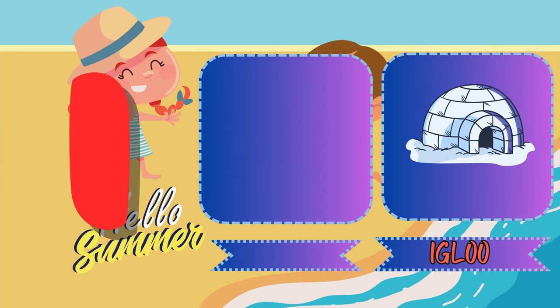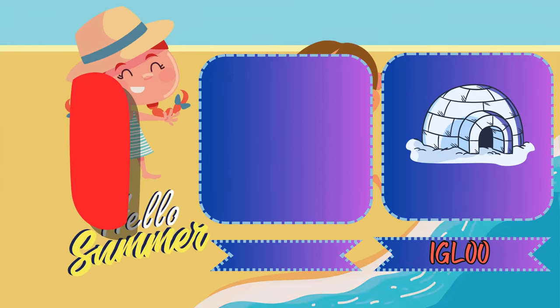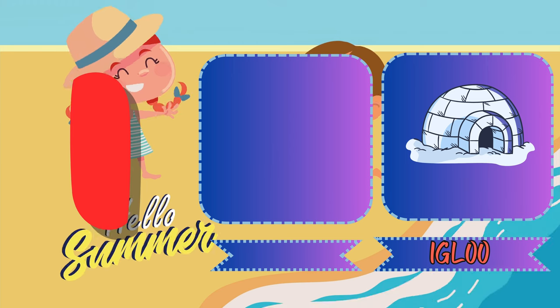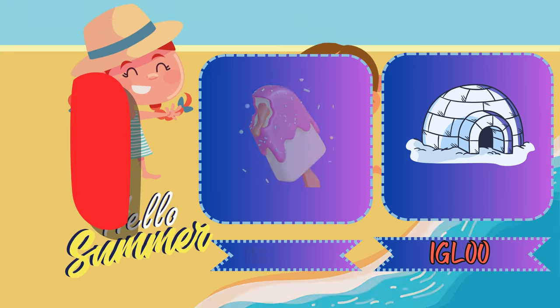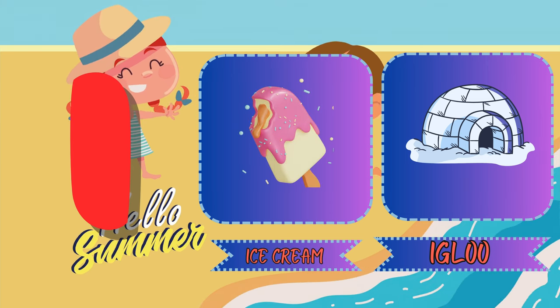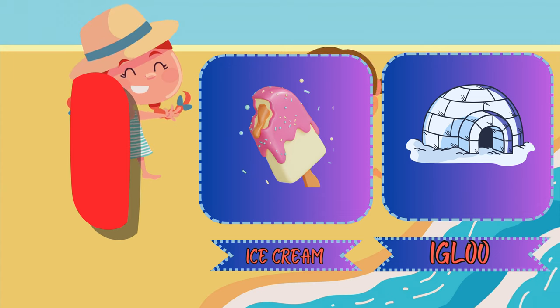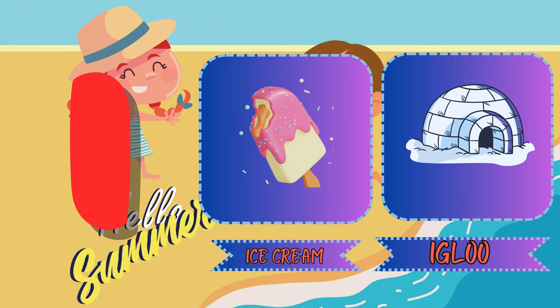I. I for igloo. This is an igloo. I. I for ice cream. This is an ice cream.